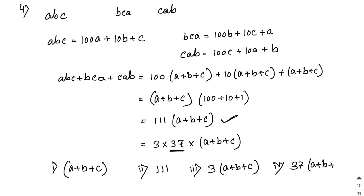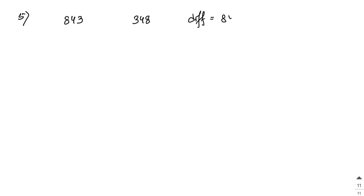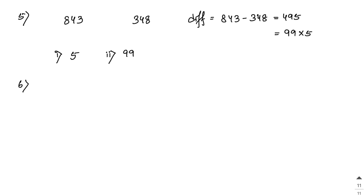Problem 5: Write the quotient when the difference of a three-digit number 843 and the number obtained by reversing the digit is divided by 99. The reverse of 843 is 348. The difference is 843 − 348 = 495, which equals 99×5. Dividing by 99 gives 5; dividing by 5 gives 99.